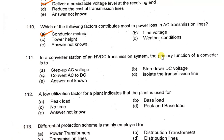In a converter station of an HVDC transmission system, the primary function of a converter is to convert AC to DC. A low utilization factor for a plant indicates that the plant is used for a very short time.